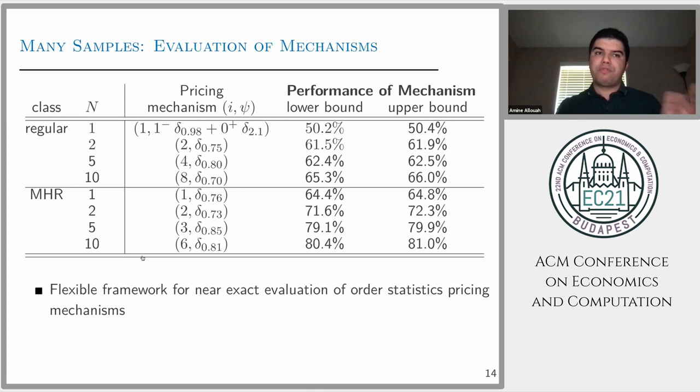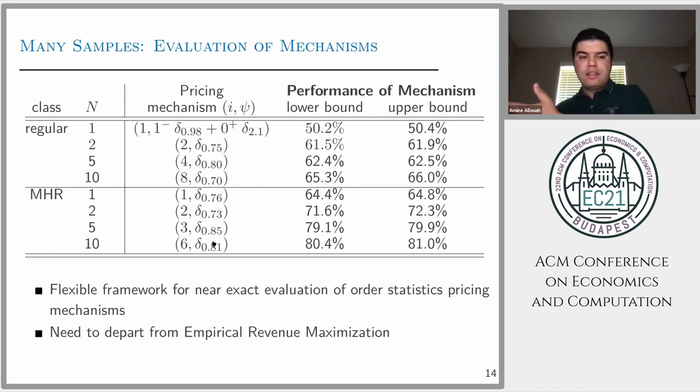This will achieve 80.4%, and as a matter of fact, we show that against this class of mechanisms our approach is tight, meaning there's no other mechanism within this class of order statistics that can achieve more than 81.81%. The main point I want to emphasize is that previous work couldn't show this result because we didn't stick with empirical revenue maximization. We have even shown that in this regime, empirical revenue maximization, which is near optimal in the asymptotic regime, is not optimal when we don't have a lot of data. We need a different angle or different class of mechanisms, and this is one insight from this work.